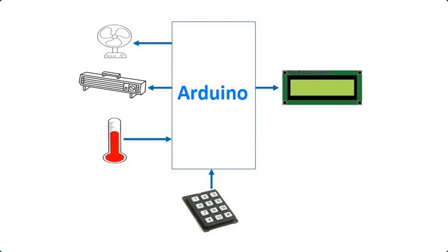Hi guys, welcome to this eleventh tutorial in this series of programming Arduino with Flowcode for absolute beginners. In this tutorial, we're going to design an automatic temperature control system. An automatic temperature control system has an ability to monitor and control the temperature of a specified area without human intervention.